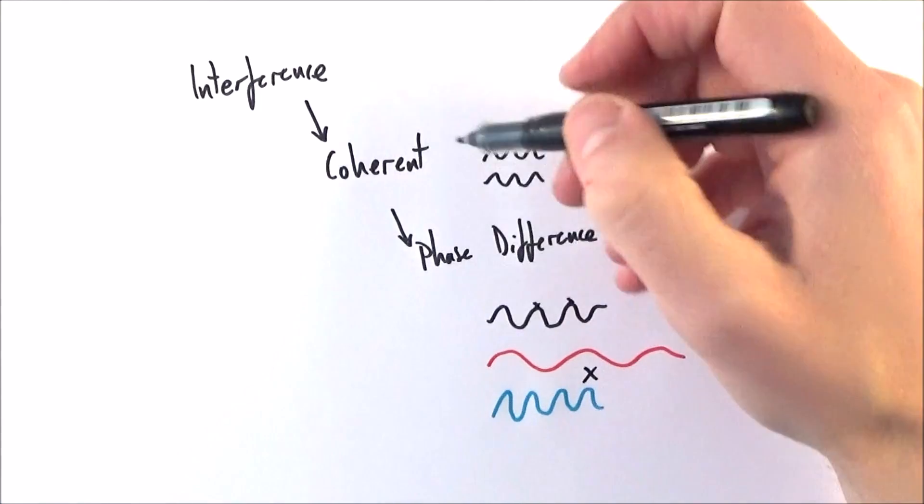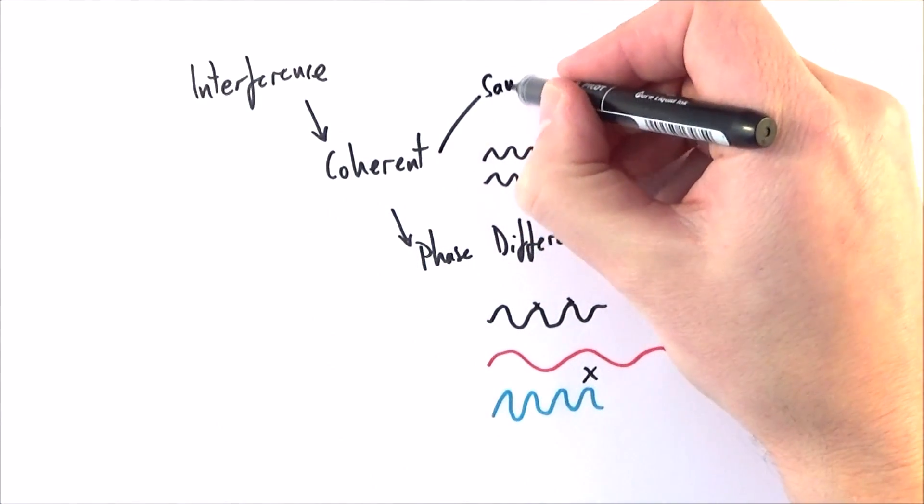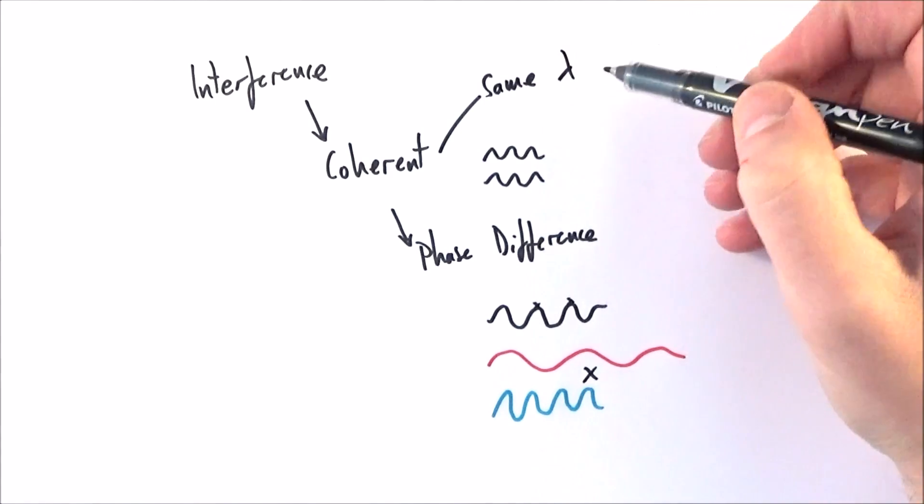In order for light to be coherent, it must have the same wavelength, which then means it's got the same colour.